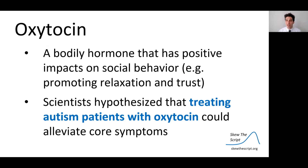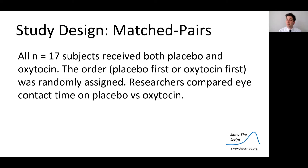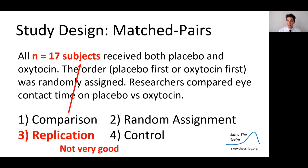To discuss this, we're going to talk about studies related to oxytocin, a bodily hormone with positive impacts on social behavior — promoting relaxation and trust in social settings. Scientists hypothesized that treating autism patients with oxytocin could alleviate core symptoms. A better-designed study was the University of Tokyo Oxytocin study in 2015. They had 17 subjects in a matched pairs experiment — each subject received both placebo and oxytocin, with the order randomized. Replication is still not very good here, and we'll revisit that.